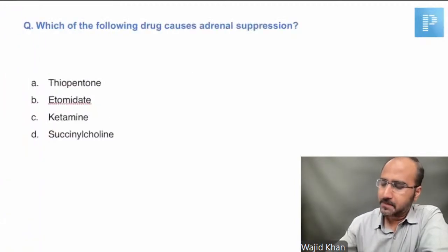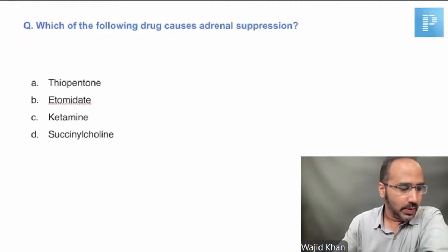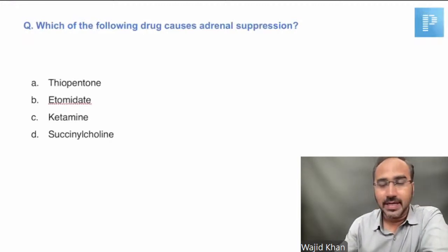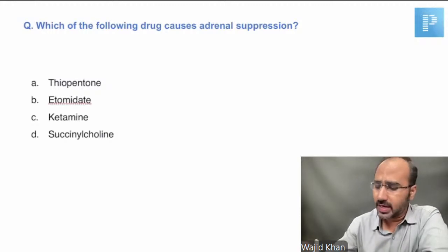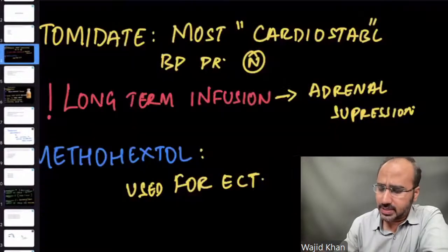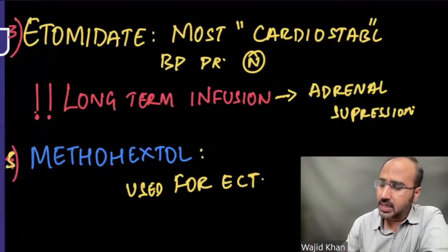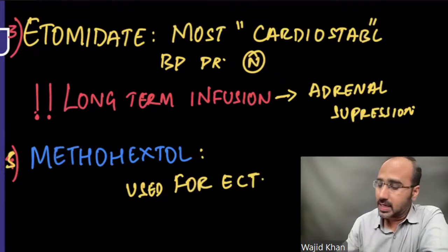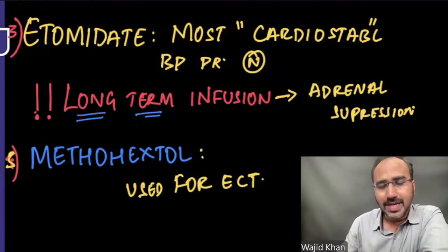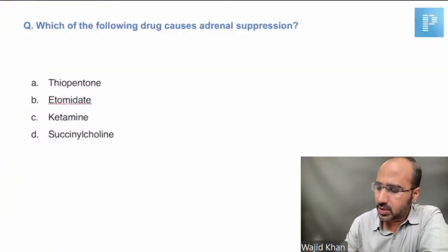Starting with the first MCQ: which of the following drugs causes adrenal suppression? There is only one IV induction agent that can cause adrenal suppression — that is etomidate. Etomidate is the most cardio-stable IV induction agent, but when given as a long-term infusion it causes adrenal suppression.